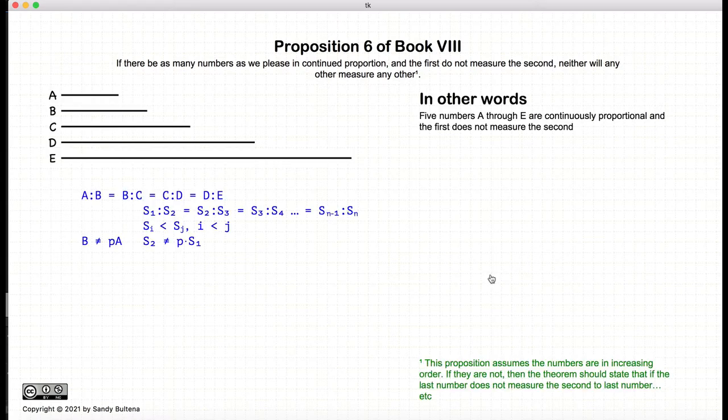In this proposition, we have a series of numbers that are continuously proportional. It doesn't matter how many numbers we have. We're demonstrating this with five numbers, but it could be a sequence of proportional numbers of any size. What we have is continuously proportional, which means A is to B, as B is to C, as C is to D, as D is to E.